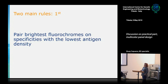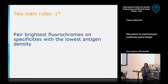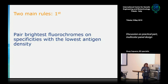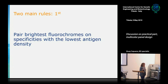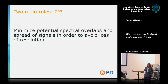The first rule: pair brighter fluorochromes with markers having the lowest antigen density. In this simple principle there are two requirements. You have to know the reagent, and you have to know the biology of your sample. This is the only requirement to apply this rule.